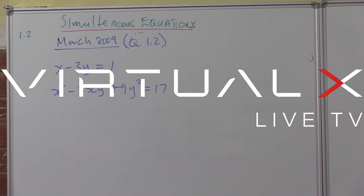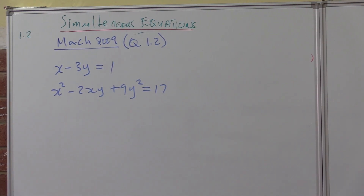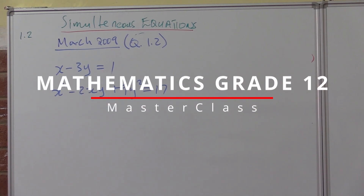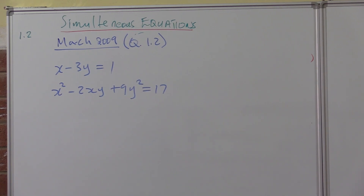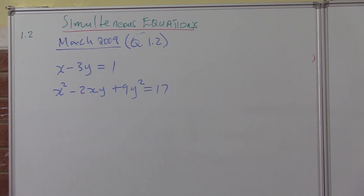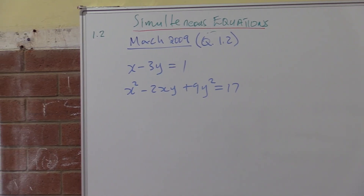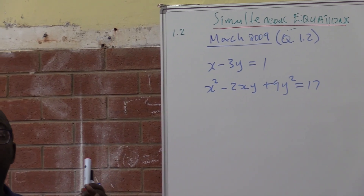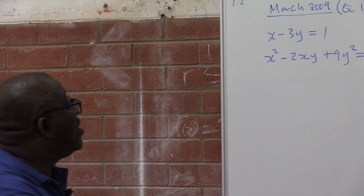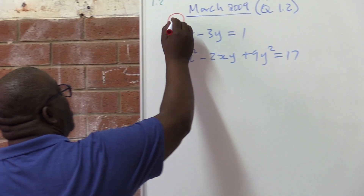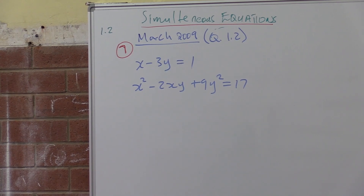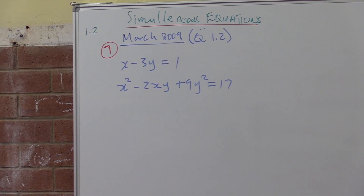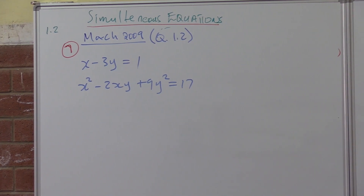We're moving on to the next section called simultaneous equations. We'll use the MAT 2009 question 1.2 exam paper as our guide. Here you're given two unknowns and you've got to solve simultaneously. This is the biggest section in algebra — it carries the biggest marks. For example, this one was worth about seven marks in that exam, while the other ones we did were between three and four marks.